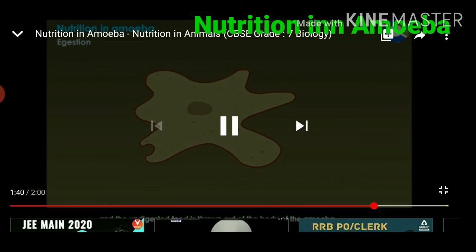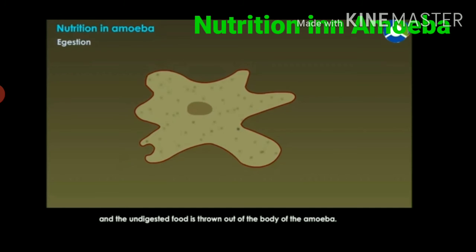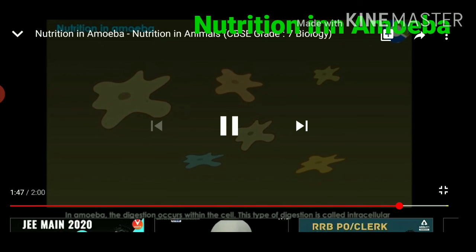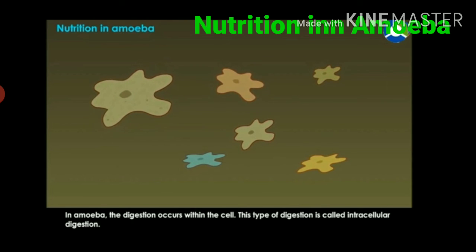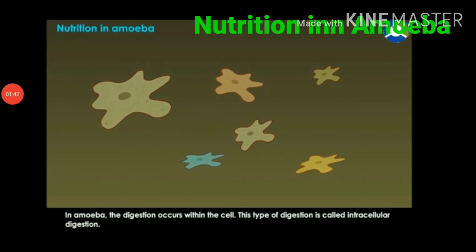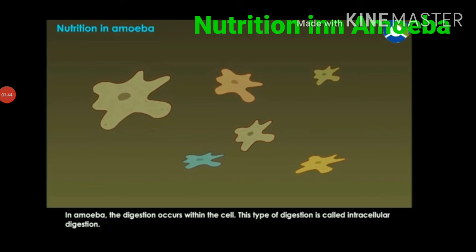The undigested food is thrown out of the body of the amoeba. Digestion in amoeba occurs within the cell. This type of digestion is called intracellular digestion.